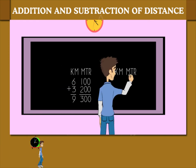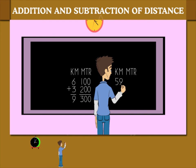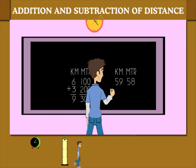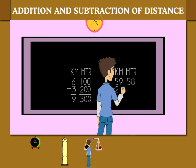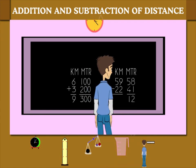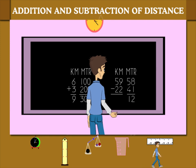He now rides 59 kilometers and 58 meters, from which he subtracts 22 kilometers and 41 meters. Sammy subtracts the meters to get 17 and the kilometers to get 37.